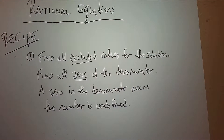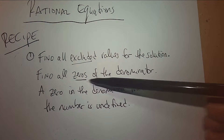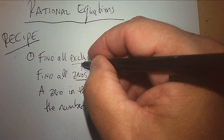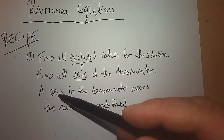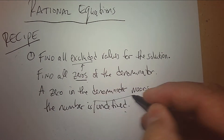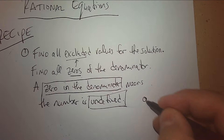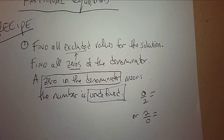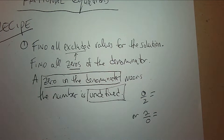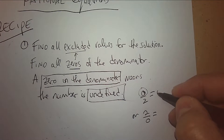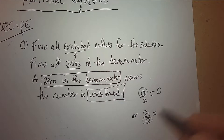Because we're dealing with fractions, we have excluded values. Why is something excluded? Why can't it be allowed? We're going to find all the zeros of the denominator. Any zero of the denominator is excluded, because a zero in the denominator means the number is undefined. If zero is in the numerator, the answer is zero. If zero is in the denominator, the answer is undefined.